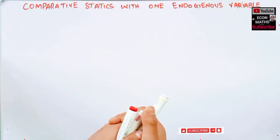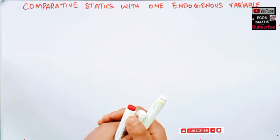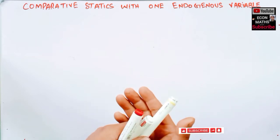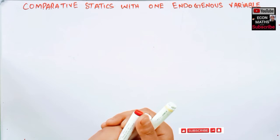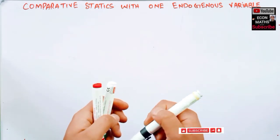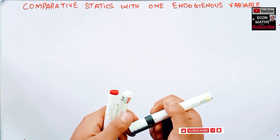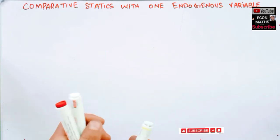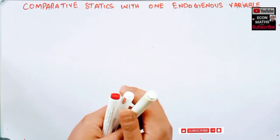In this video we will try to learn about comparative statics with one endogenous variable. As discussed in an earlier video, comparative statics is used to compare the different equilibrium values of the endogenous variables resulting from changes in the values of the exogenous variables and the parameters in the model.